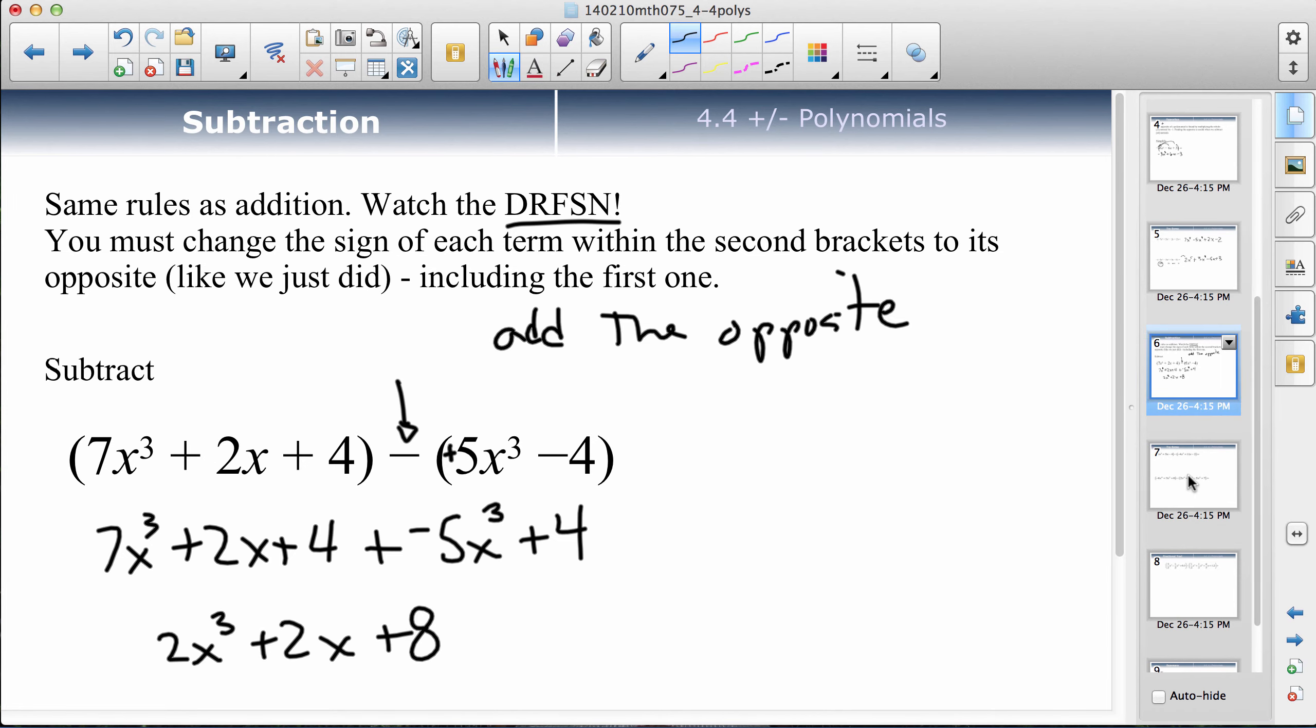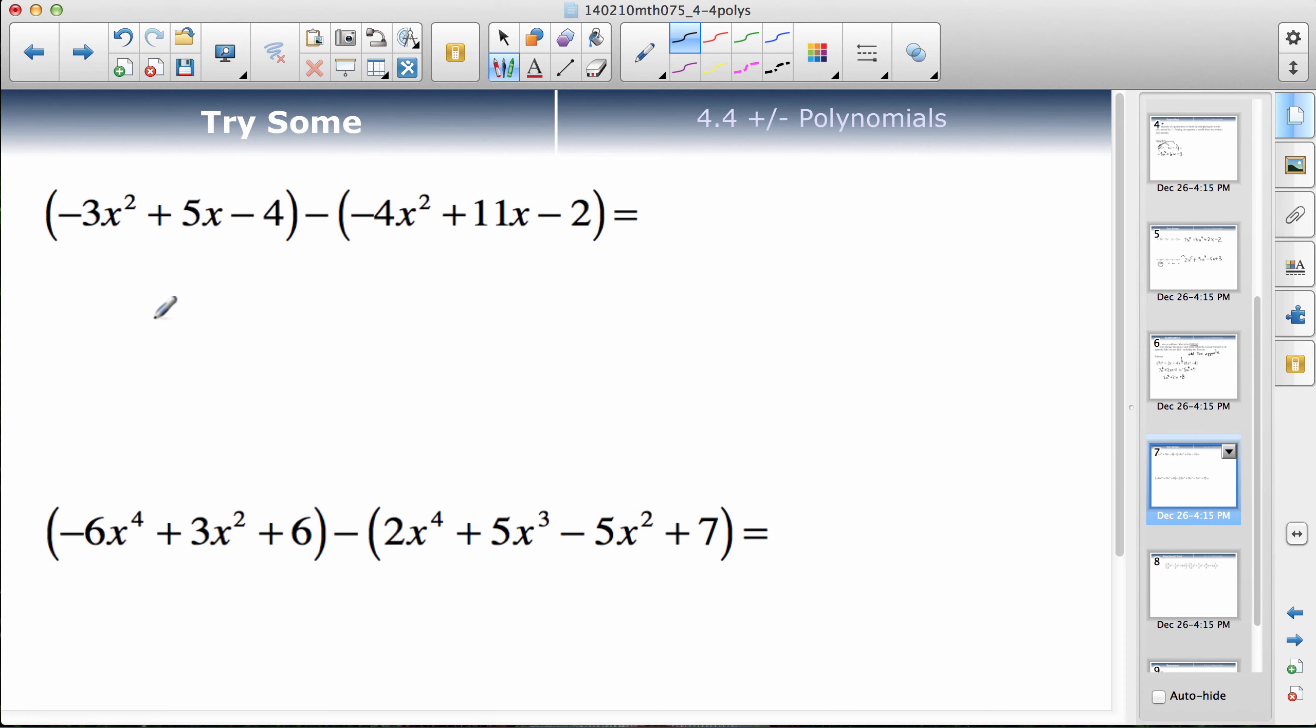Try some. Okay, hopefully you pressed play. First thing I would do, I've tried to do this in my head where I don't even write anything down. And having to do that add the opposite thing, the dirty, rotten, filthy, stinking negative always catches me. So I always find it easier just to change it. This minus changes to a positive, the negative 4x squared changes to a positive 4x squared, this changes to a negative 11x, this changes to a positive 2. Now collect like terms. Down 3, gain 4, so I'd be up 1x squared.